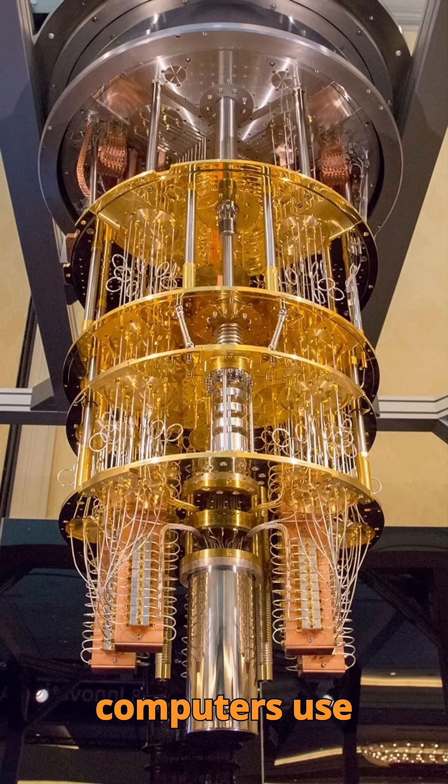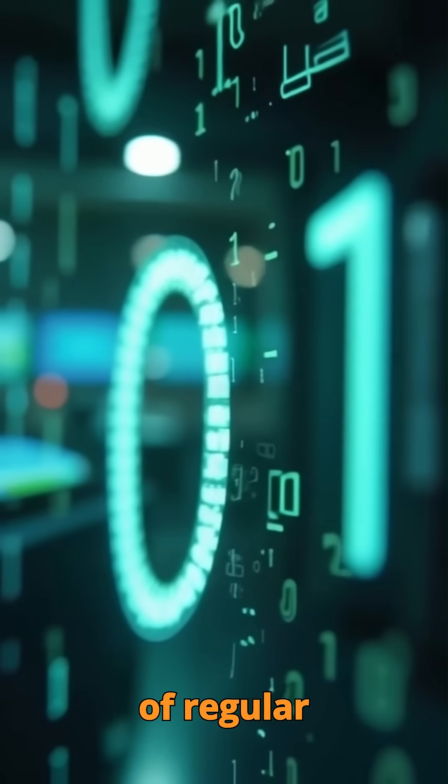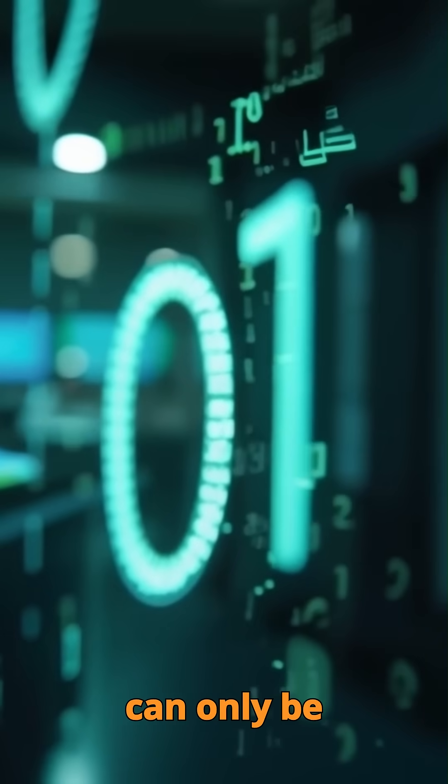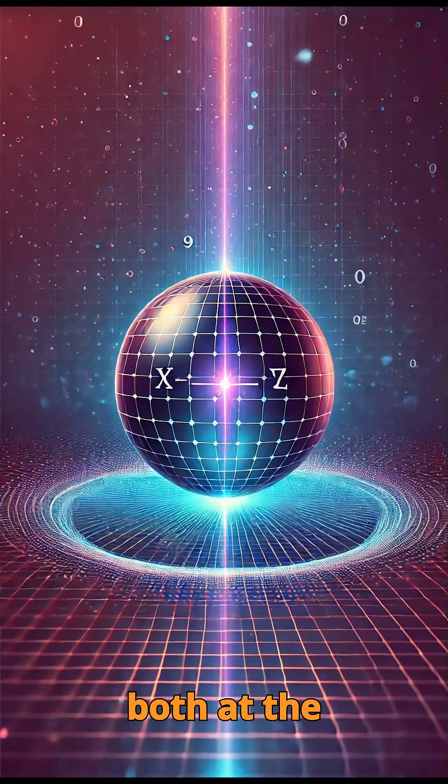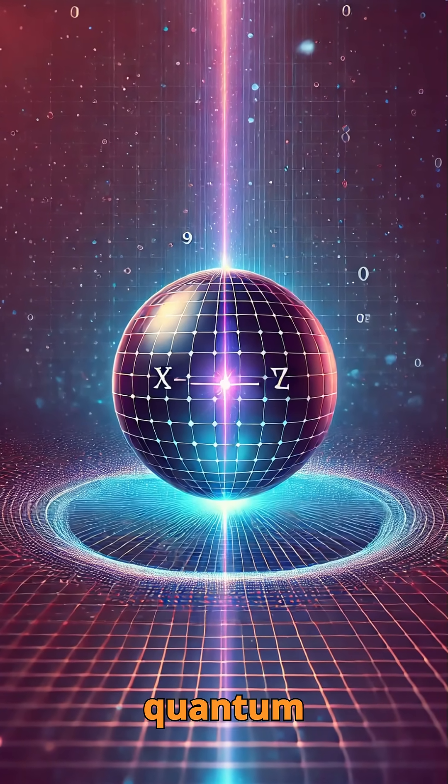Quantum computers use qubits instead of regular bits. Unlike bits, which can only be 0 or 1, qubits can be 0, 1, or both at the same time, thanks to quantum superposition.